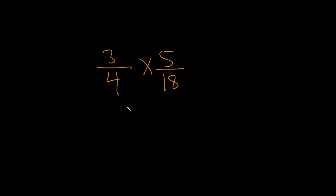Multiply the fractions. We'll start by multiplying straight across. So we have 3 times 5, over 4 times 18.